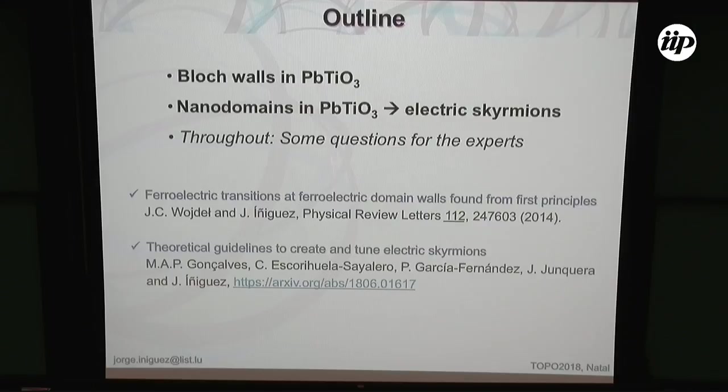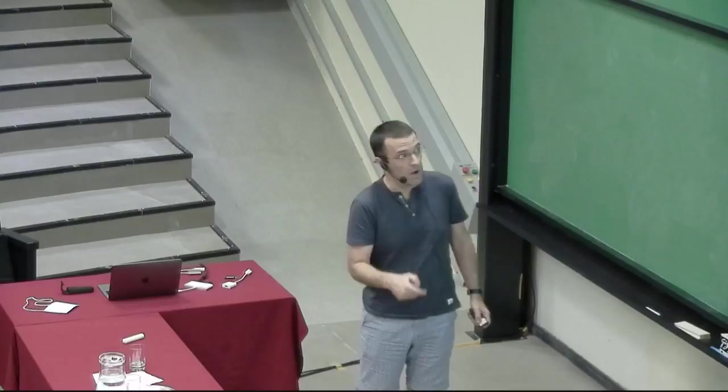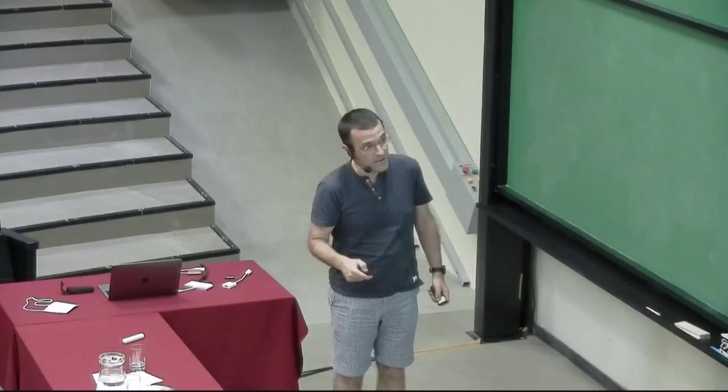The outline is this: first I'm going to tell you about blocked walls in lead titanate, and then I'm going to tell you how to use that property to create electric skyrmiums in lead titanate if one writes nano domains. There will be some questions for the experts. The first part of the talk is from a paper from a few years back, and the second part is a paper you can find in the archive.